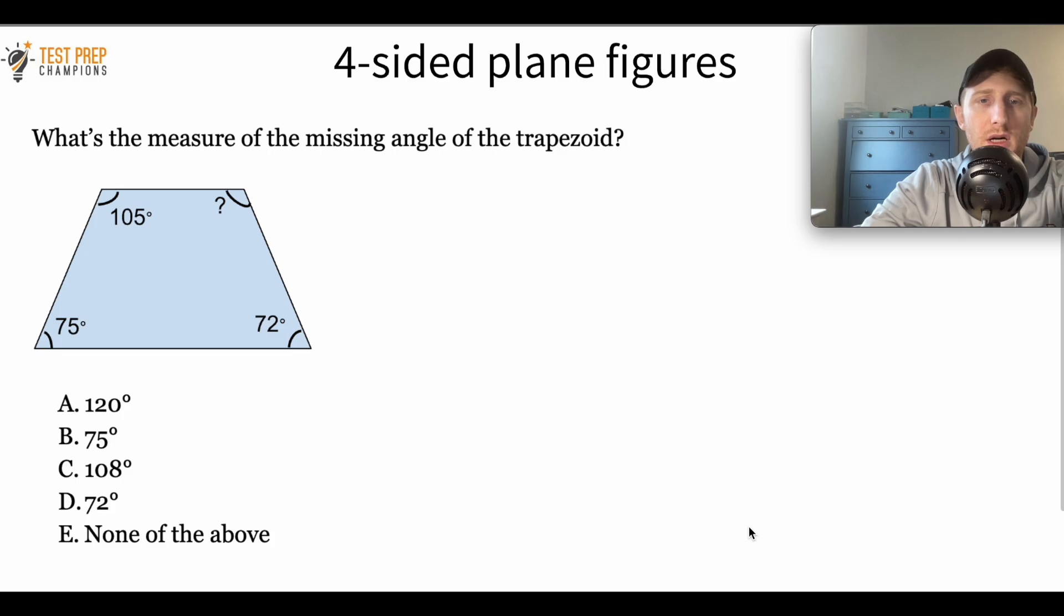Okay, so for this question here, what we want to do is set up an equation. And we're trying to find this missing side here. We know that a trapezoid is a four-sided plane figure. And we know that for four-sided plane figures, the internal angles are going to add up to be 360 degrees.